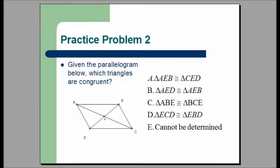Here's practice problem two. Given the parallelogram below, which triangles are congruent? You are given five choices. A: triangle AEB is congruent to triangle CED. B: triangle AED is congruent to triangle AEB. C: triangle ABE is congruent to triangle BCE. D: triangle ECD is congruent to triangle EBD. Or E: this value cannot be determined.